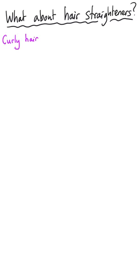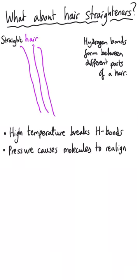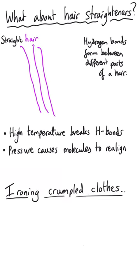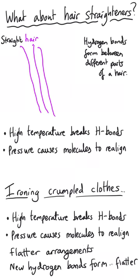Last of all — not quite such profound impacts of hydrogen bonding, but perhaps more immediately obvious in day-to-day life — hair straighteners and ironing. Both work on the same principle: hair can get curly due to hydrogen bonds forming between different parts of a strand of hair. When you use hair straighteners, the heat and pressure break these hydrogen bonds and the molecules realign into a straighter arrangement. The same is true of ironing — the iron provides high temperatures to break hydrogen bonds in crumpled material, and the pressure helps the molecules realign into a flatter position. When you take the iron away, new hydrogen bonds form, keeping the molecules in their newer, flatter positions.